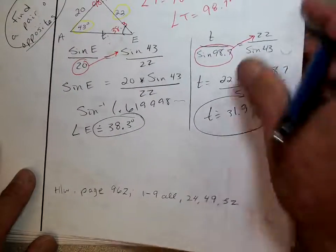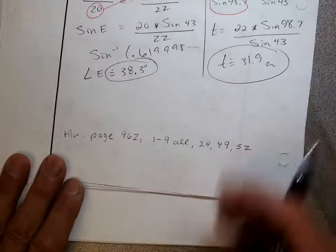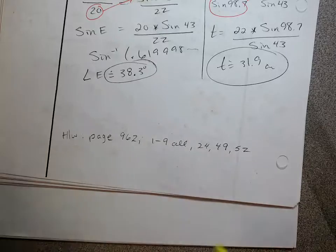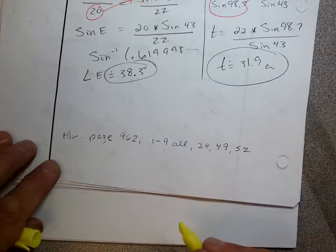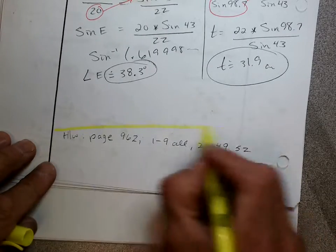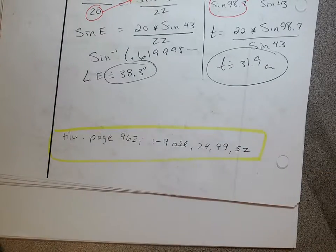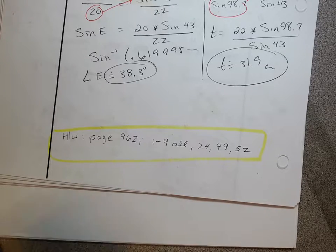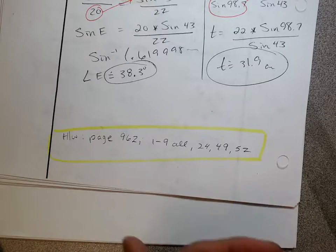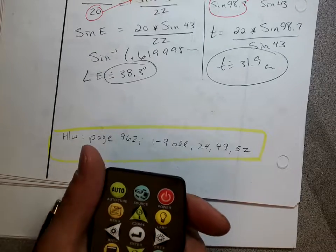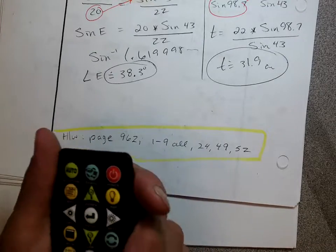So, homework: page 962, one to nine all, 24, 49, and 52. Draw the picture, show the work. Draw the picture, show the work. Draw the picture, show the work. Thank you.